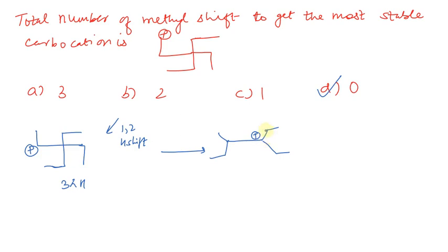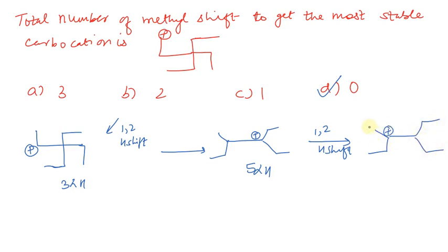After the ethyl shift, the structure has 5 alpha hydrogens. Others may count 4 — 1, 2, 3, 4 — but here including hydrogen it becomes 5 alpha hydrogens. After this, again a hydride shift occurs: again a 1,2 hydride shift, shifting the positive charge further. Finally, see how the compound becomes: here 3, here 2, here 1 — that is 3+2+1 = 6 alpha hydrogens. So we started from 2 alpha hydrogens, then 3, then 5, then 6.